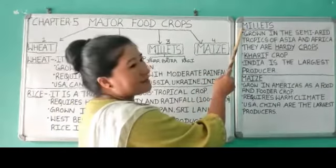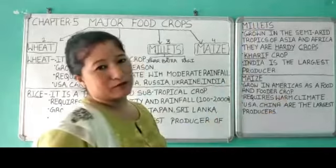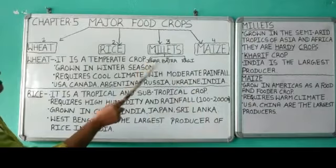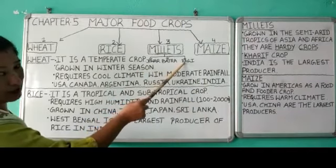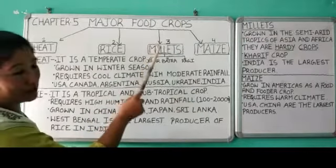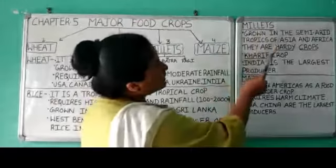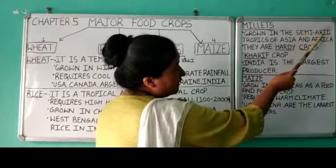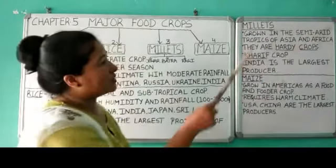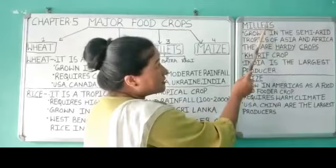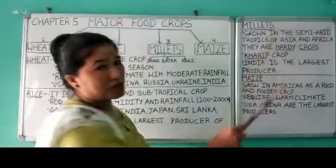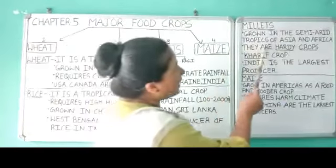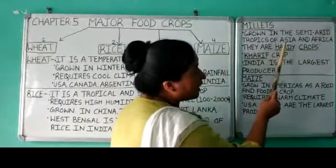The third food crop is millets, often called a coarse food grain. There are three types of millets: Jowar, Bajra, and Ragi. Millets are grown in the semi-arid tropics of Asia and Africa. Semi-arid means these regions do not require much water or rainfall for crop growth.